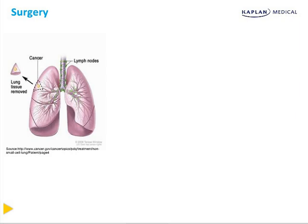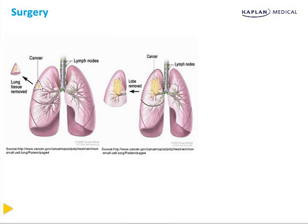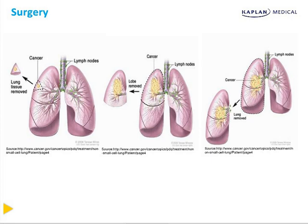If a lung cancer is resectable, there are three surgeries: wedge resection for very small lesions; lobectomy for larger or more infiltrative lesions within a specific section of lung; and removal of the entire affected lung, typically only done in young patients or those with otherwise healthy lungs. Unfortunately, most lung cancer patients are smokers with emphysema or chronic bronchitis, making the remaining lung insufficient to compensate for the large amount of tissue removed along with the tumor.